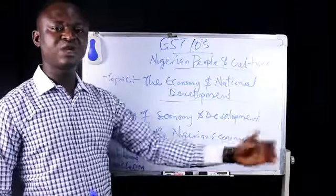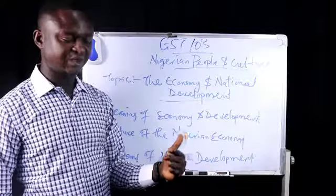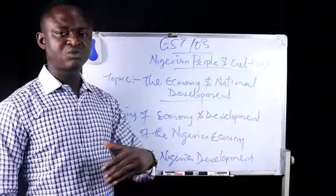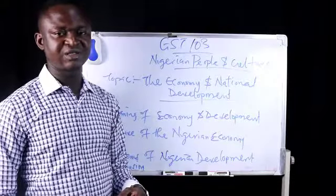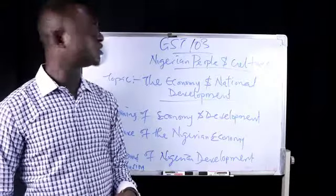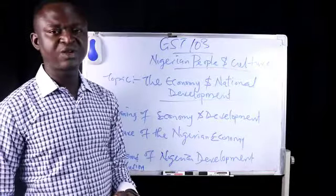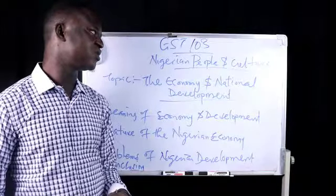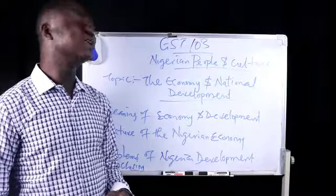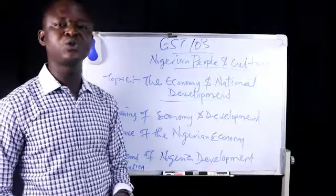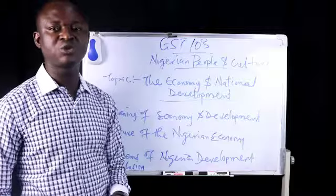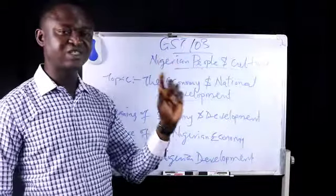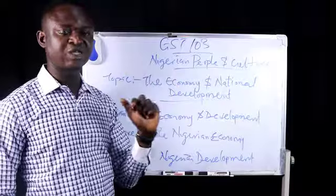From Lugard, in 1914, by 1922 a new colonial administrator was appointed, known as Sir Hugh Clifford. Clifford became the colonial administrator of Nigeria in 1922 and he gave Nigeria a constitution when he assumed office, called the Clifford constitution of 1922.